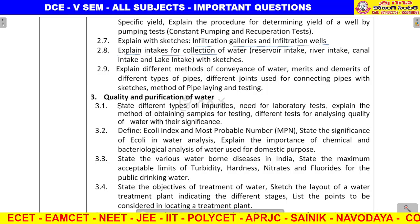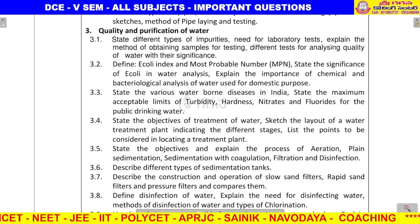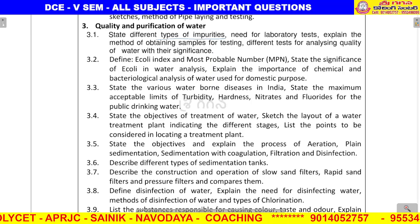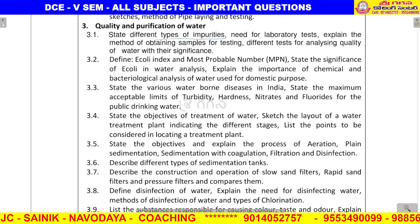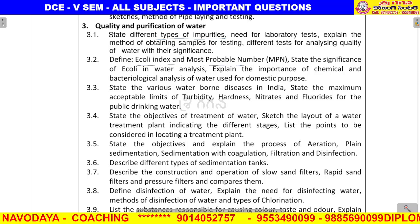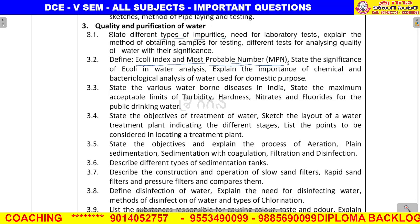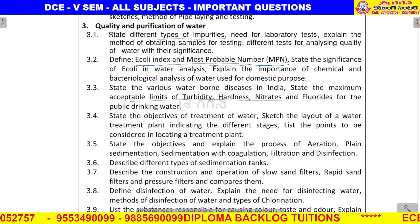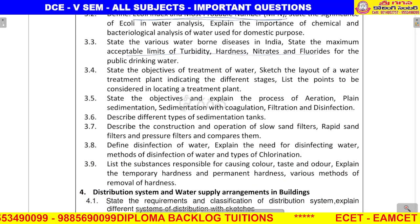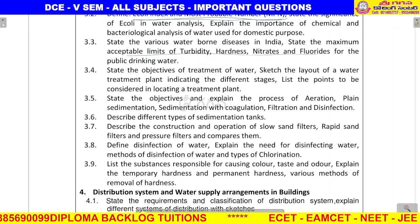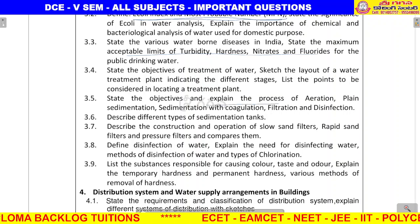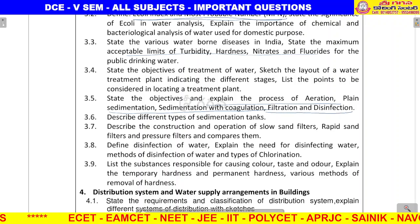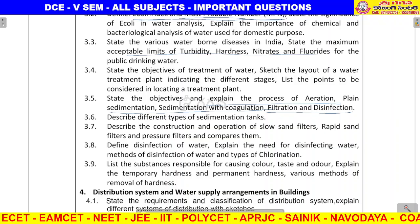Third unit: quality and purification of water — this is important. Different types of impurities — three marks. Next, E.coli index and most probable number (MPN) — important question, three marks.